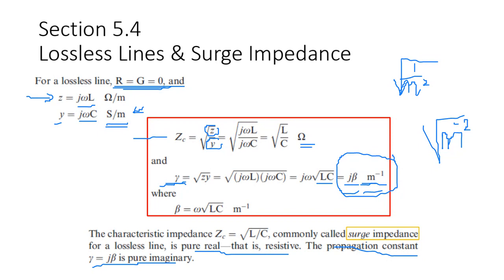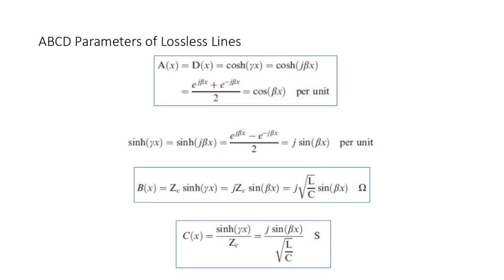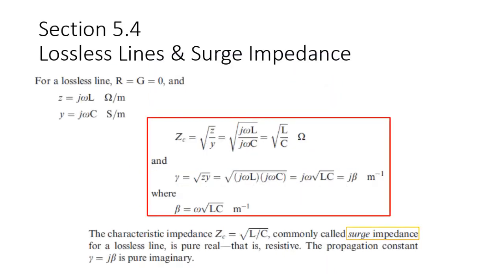So the characteristic impedance or surge impedance is pure real. How do we find the ABCD parameters? Remember, we will also use ABCD parameters in chapter 7. It's very important to understand how to determine ABCD parameters for a lossless line. We use cosine hyperbolic, and since we have only J beta, A and D become cosine beta X, where X is the length, because beta is per meter.